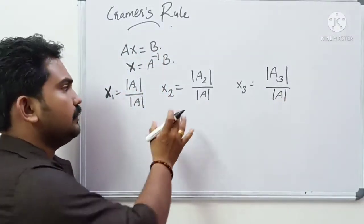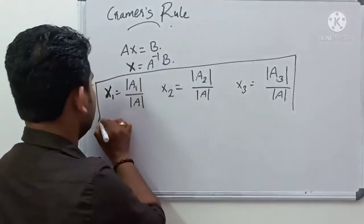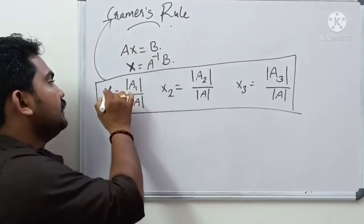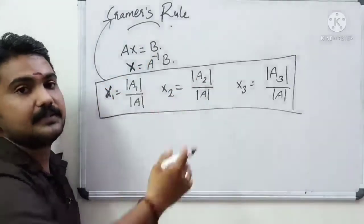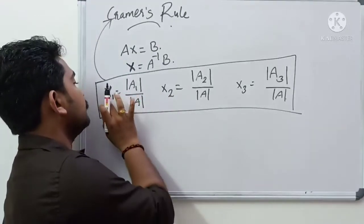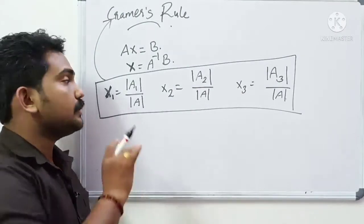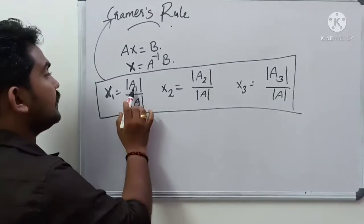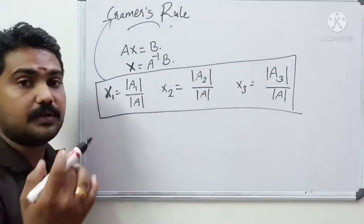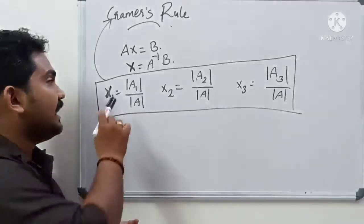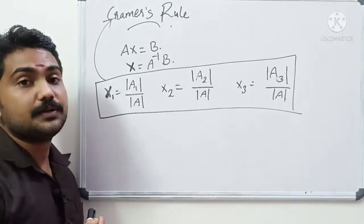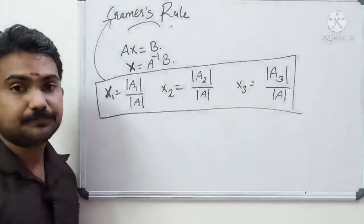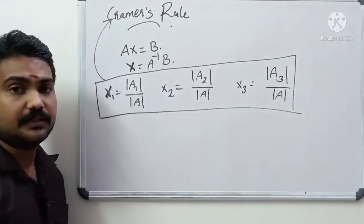Okay, clear? This equation is called Cramer's rule. This equation is called Cramer's rule. Now let's take a look at a 3x3 example — if you want to learn, let's try it.